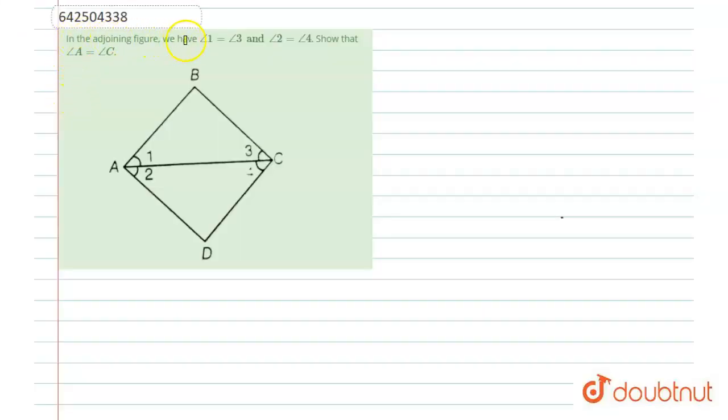Hello friends, let's see the question. The question says in the joining figure we have angle 1 is equal to angle 3 and angle 2 is equal to angle 4, so that angle A is equal to angle C. So let's approach the solution.